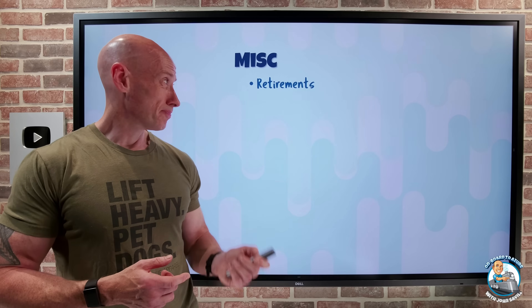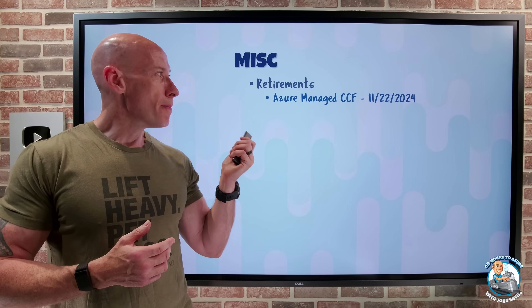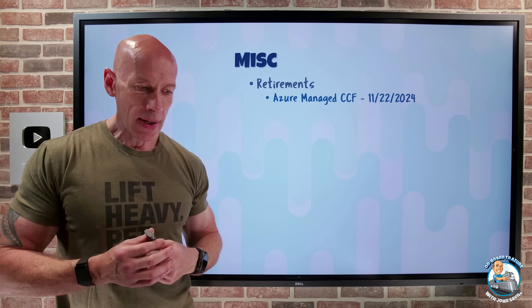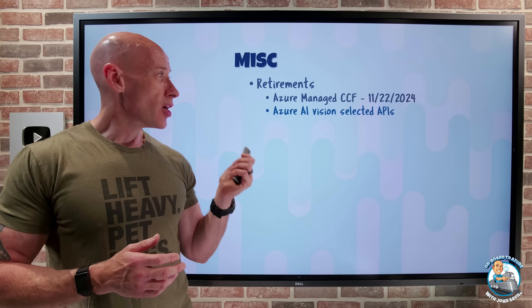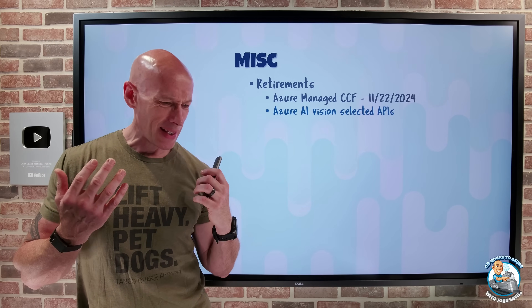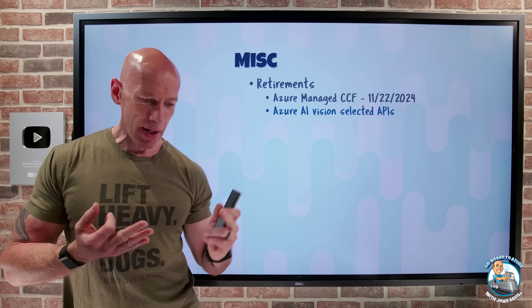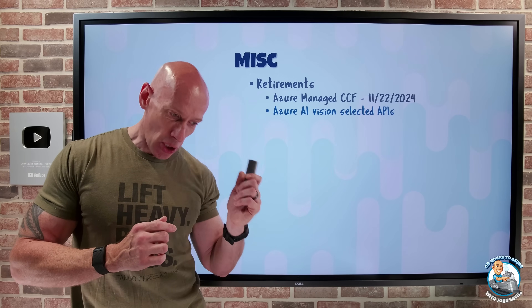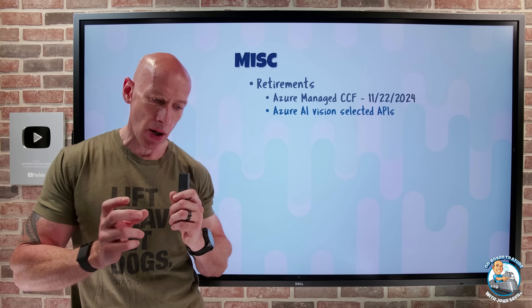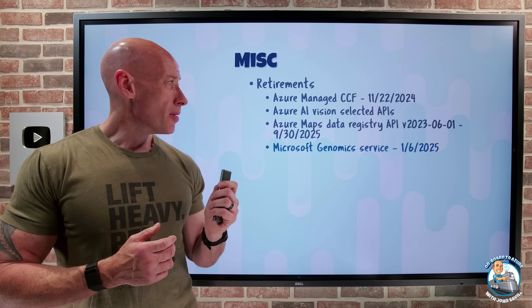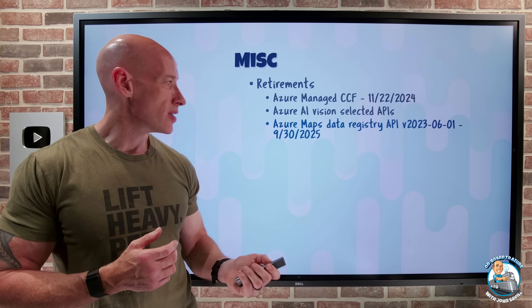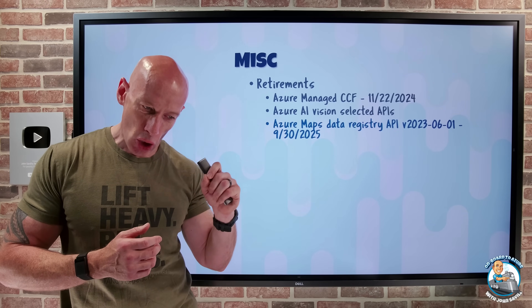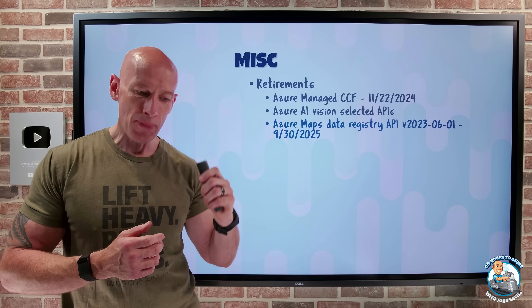Miscellaneous — a lot of retirements. Azure Managed CCF (Confidential Consortium Framework) was a preview service and is retiring very soon — migrate to the Azure Confidential Ledger. Azure AI Vision has a whole bunch of APIs retiring: Image Analysis 4.0, Custom Image Classification, Custom Object Detection, Product Recognition, and Background Preview APIs will be retired on January 10th, 2025. On March 30th, 2025, the Spatial Analysis Edge Container will be retired and requests to the service will fail. Azure Maps Data Registry API 2023-06-01 retires September 30th, 2025, and the Azure Maps Creator Services API V2 and the 2023-03-01 Preview also retire September 30th, 2025.